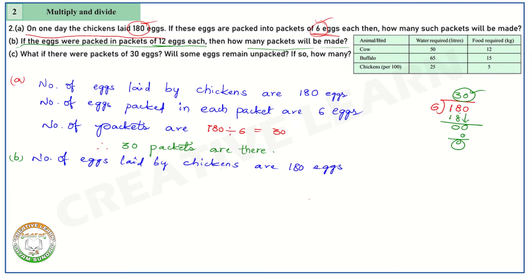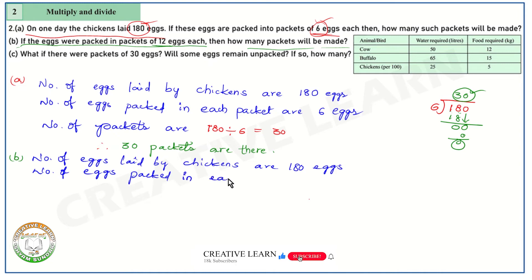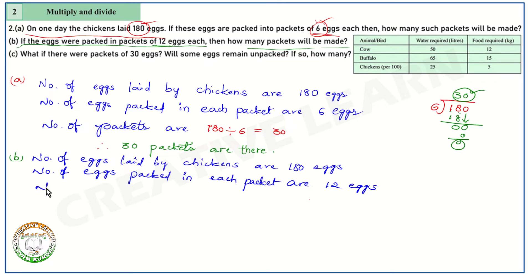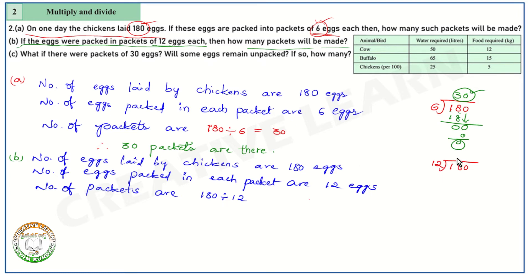Number of eggs packed in each packet are 12 eggs. So again we have to do the division. Number of packets: 180 divided by 12. Let's do the division — total 180 eggs, each packet consists of 12 eggs.